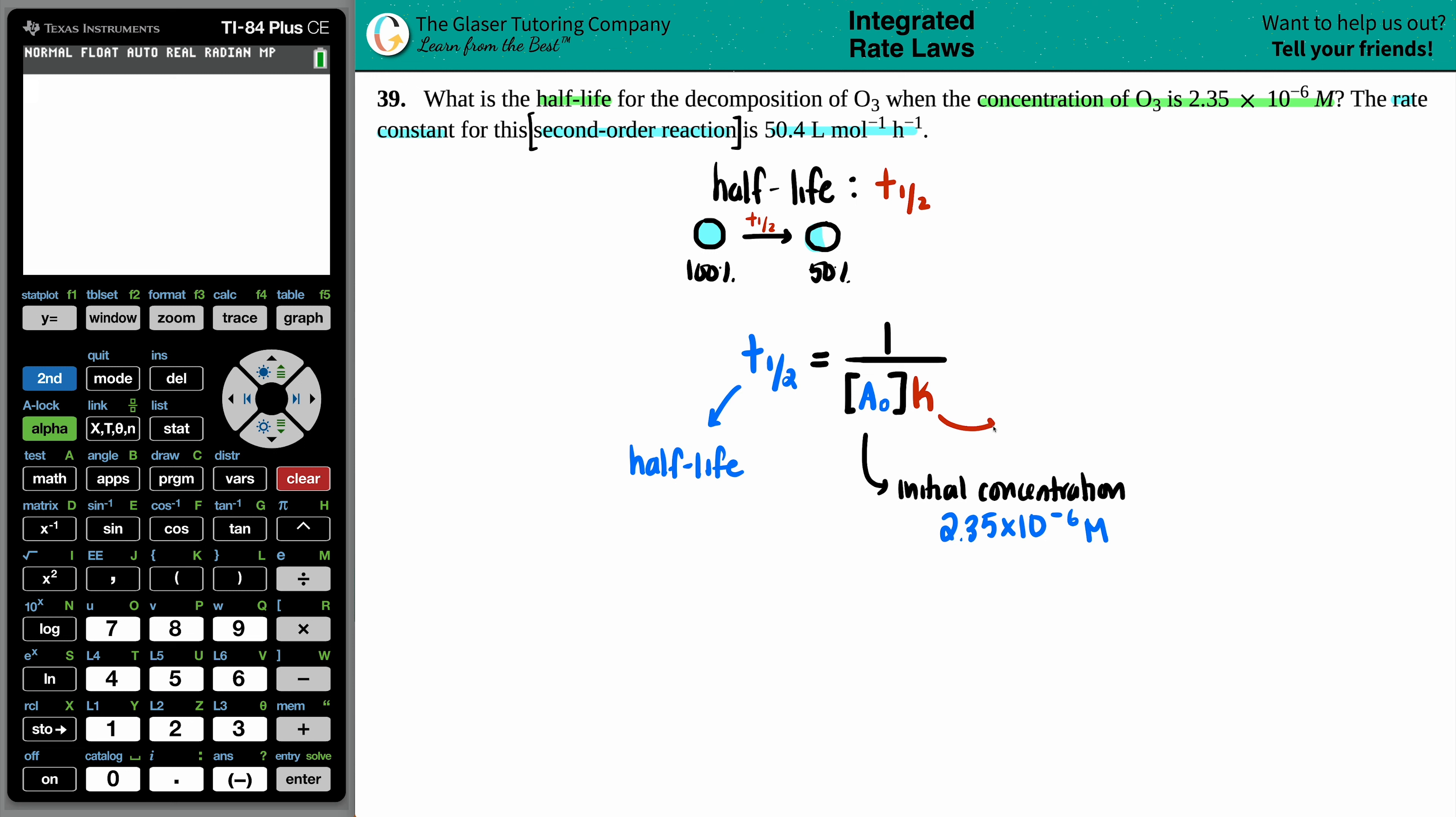And that's going to be multiplied by the K value, which is the rate constant. Did they tell us that? Yeah, they said that the rate constant for this reaction is 50.4. Now they say that it's liter per mole per hour. Just know that liters per mole is the same thing as saying molarity to the minus 1. So that's how these molarities cancel out. And then H is hour.